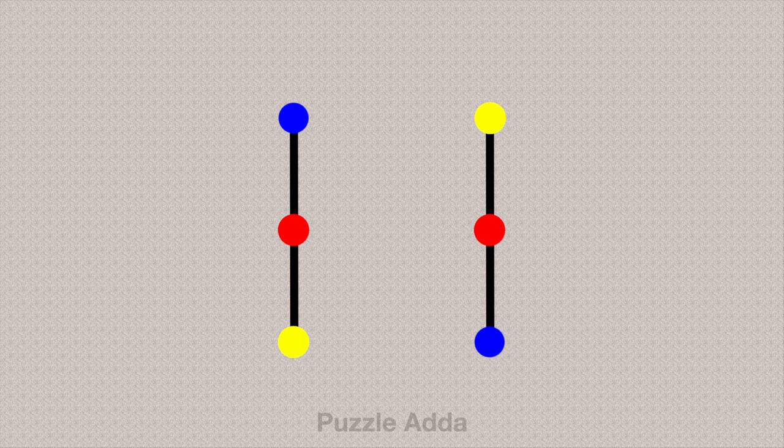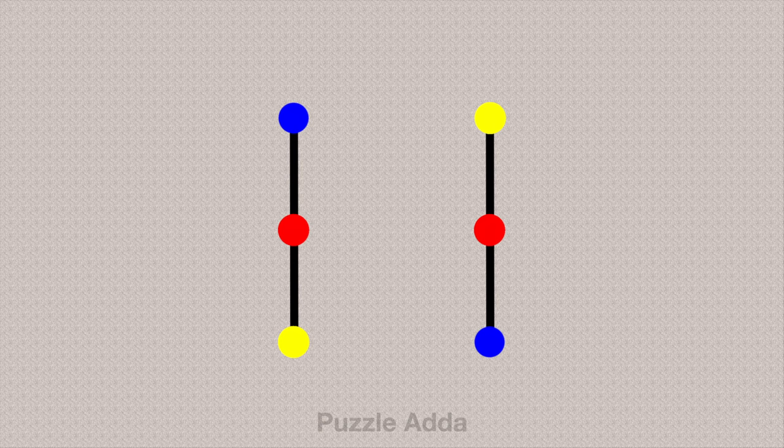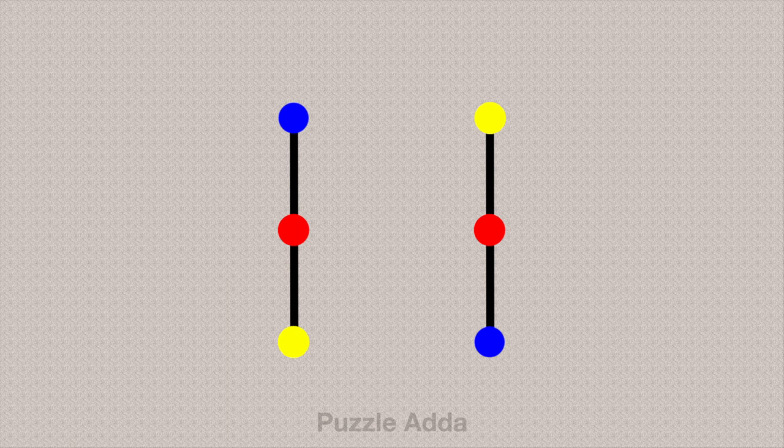In the first line, the order is blue, red, and then yellow. In the second line, the order is yellow, red, and then blue.